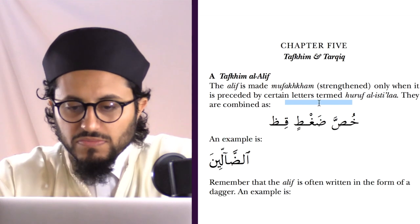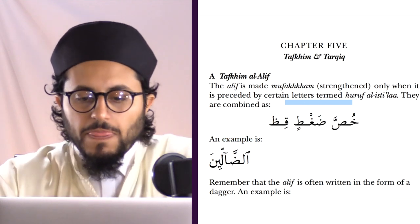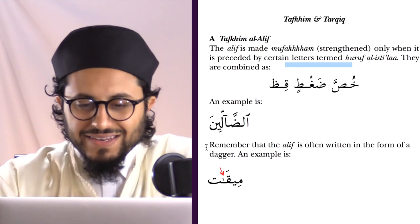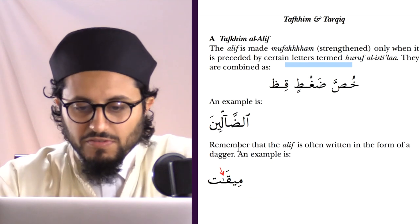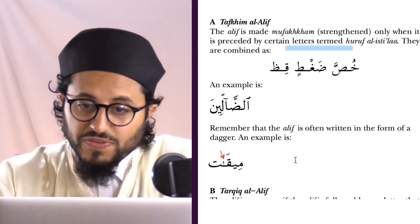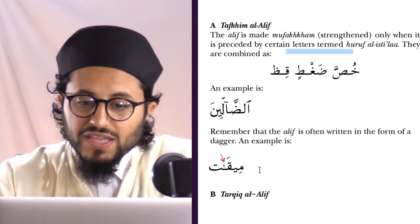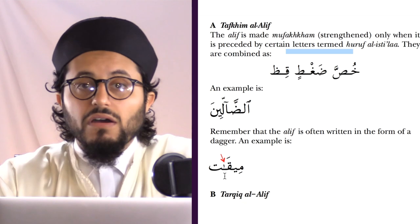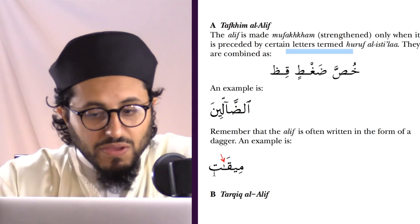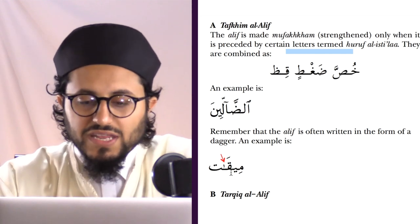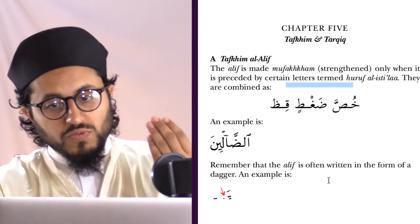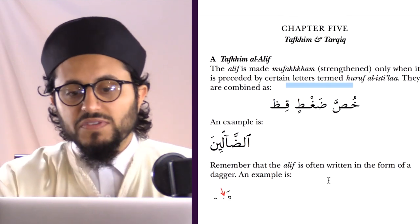An example is Abbalin. Remember that the Alif is often written in the form of a dagger too, so be careful with dagger Alifs — you might encounter those. An example is Miqat: this dagger right here is an Alif, so you count it as an Alif — Miqat. So that's Tafkheem Al-Alif, and that's really your first rule of Tajweed: when to give Alif Tafkheem.